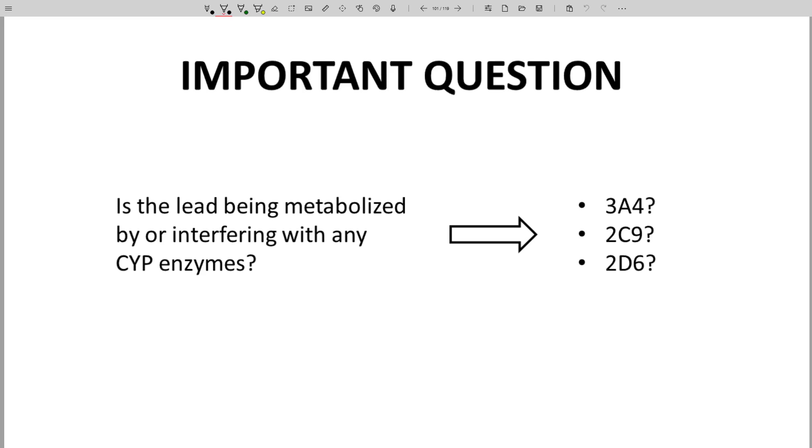As a lead advances through a drug discovery program, the team will eventually want to gather information on which CYP isoform is responsible for metabolizing the lead as well as determining whether a lead inhibits any CYP isoforms. These types of studies often require multiple assays and are performed using automated screening techniques.